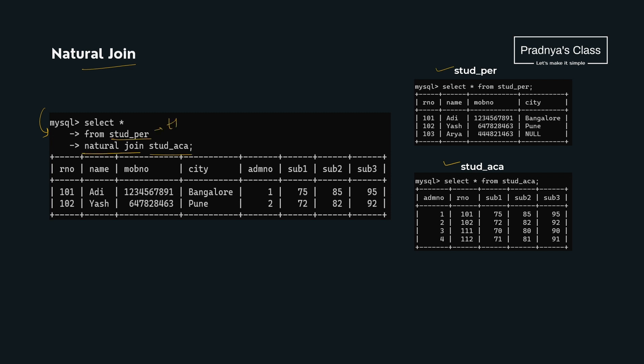Look at the output — we are getting the matching records from the tables, just like inner join and equi join. So to display matching records, we have three options: inner join, equi join, and natural join.